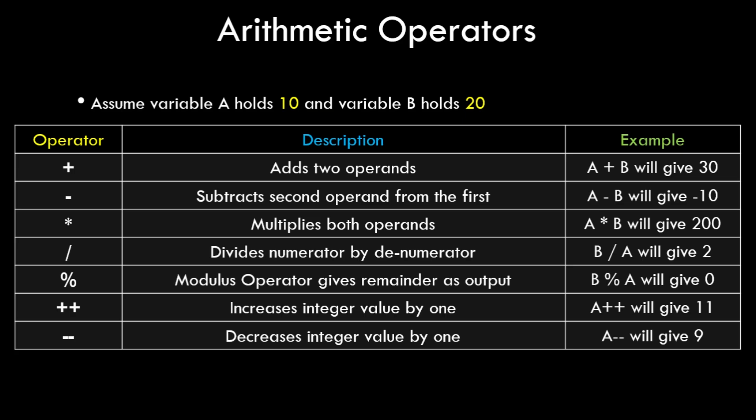The fifth arithmetic operator is the modulus operator. When we say b mod a it gives us 0, because the modulus operator returns the remainder. Since 20 is completely divisible by 10, the remainder is 0. So the modulus operator is used when we're interested in the remainder.